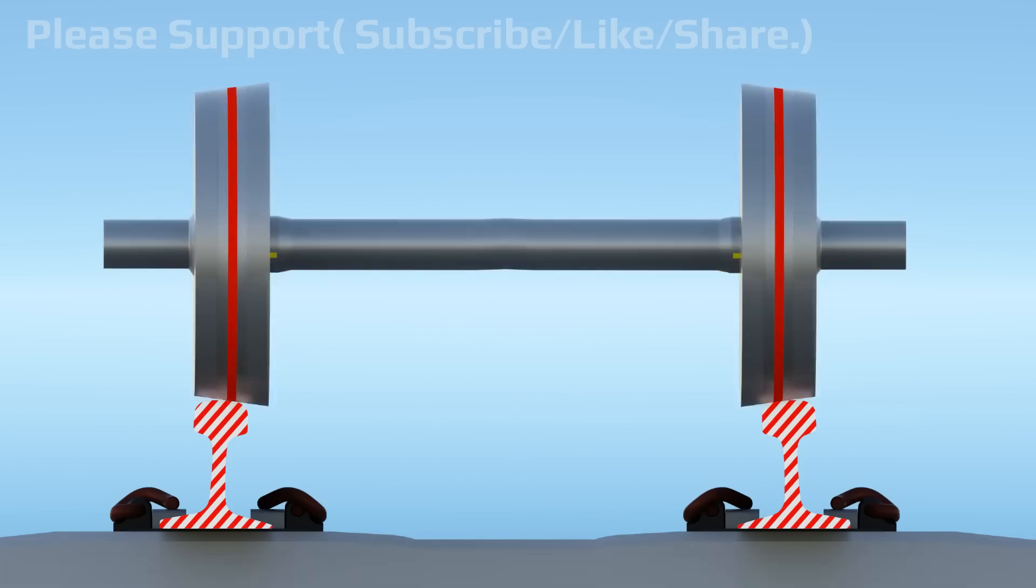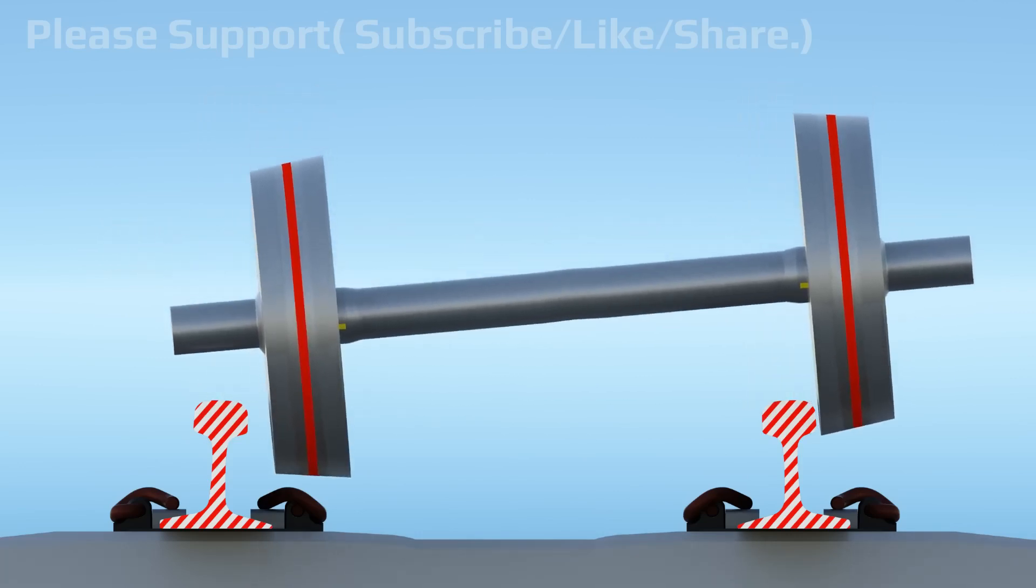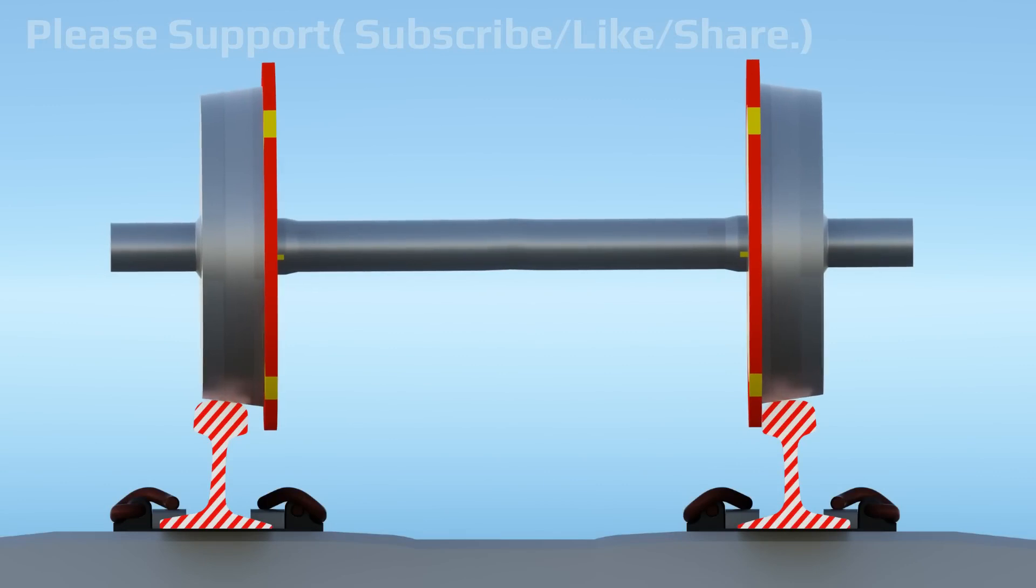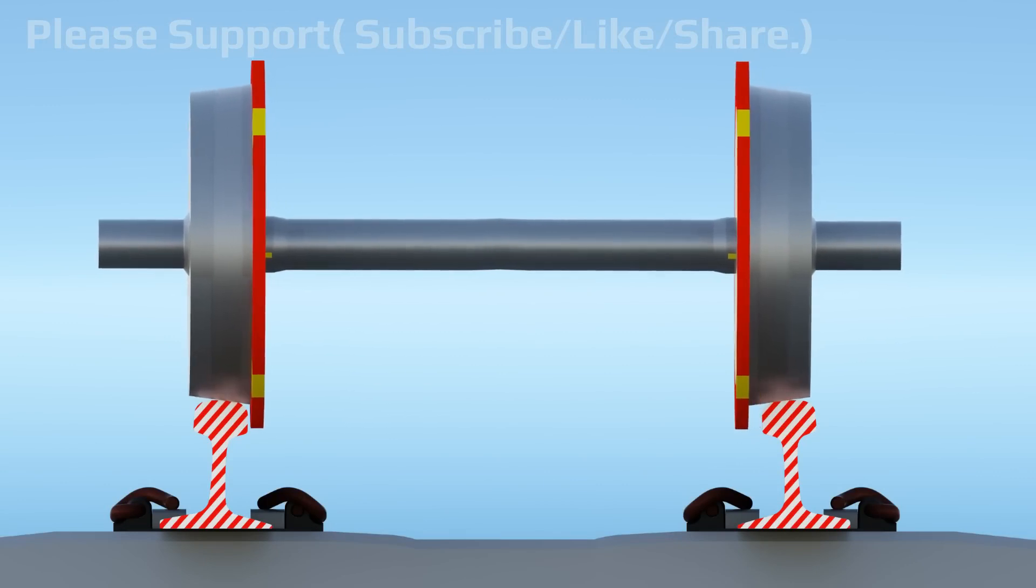If the wheel set moves beyond the tolerable limit, then it would fall off the track rails. That is why wheel flange sections are added as a last resort to prevent wheel derailment from the track.